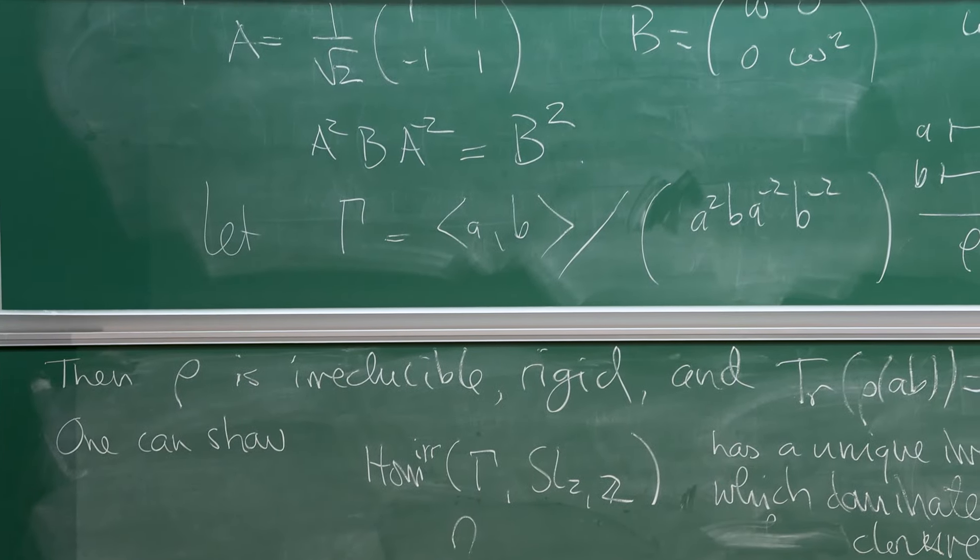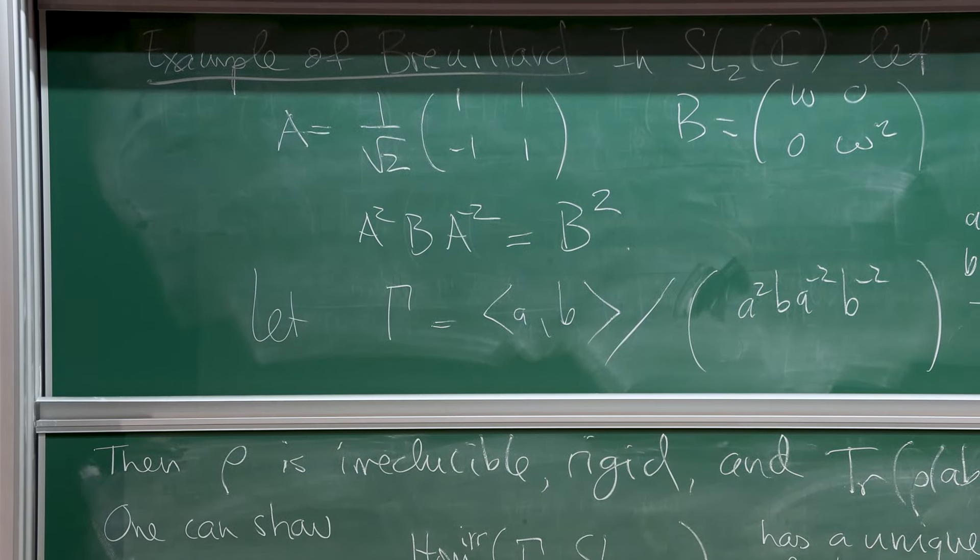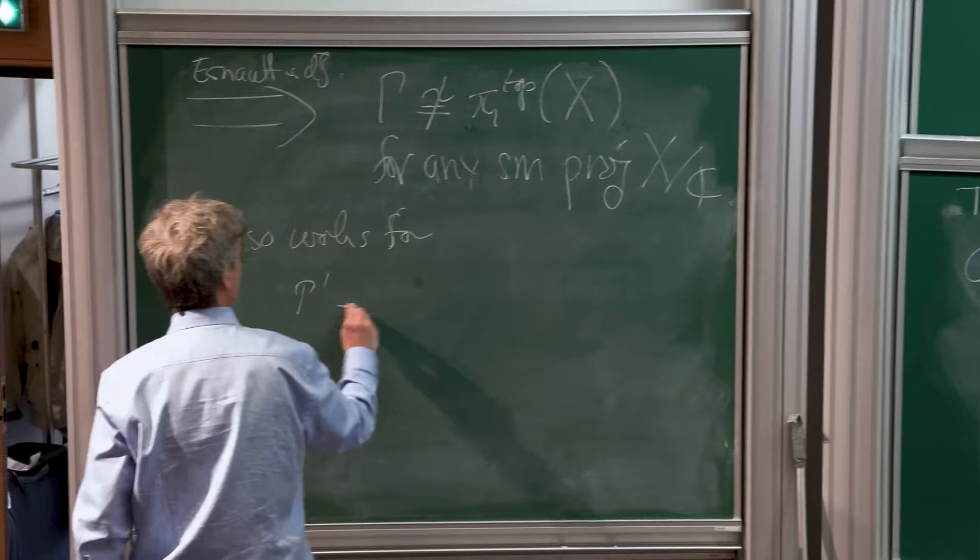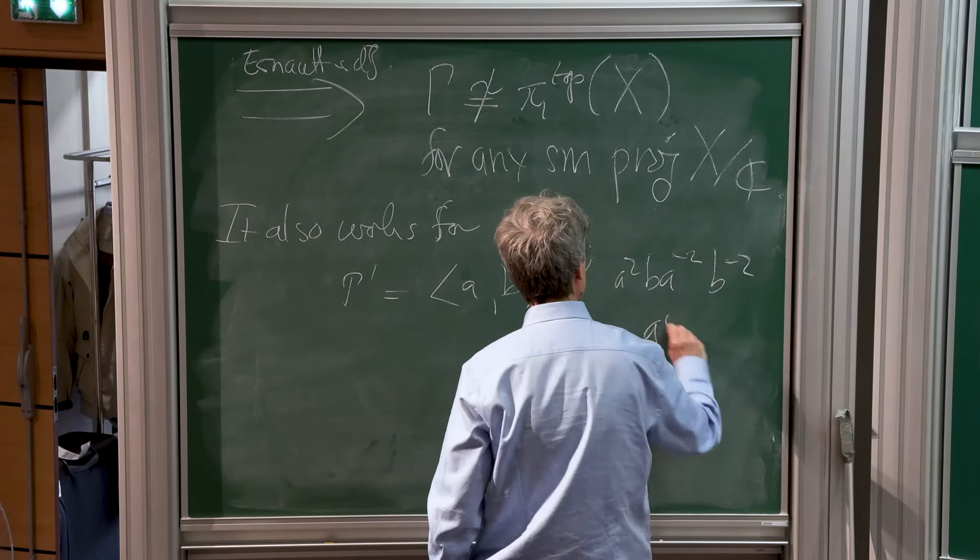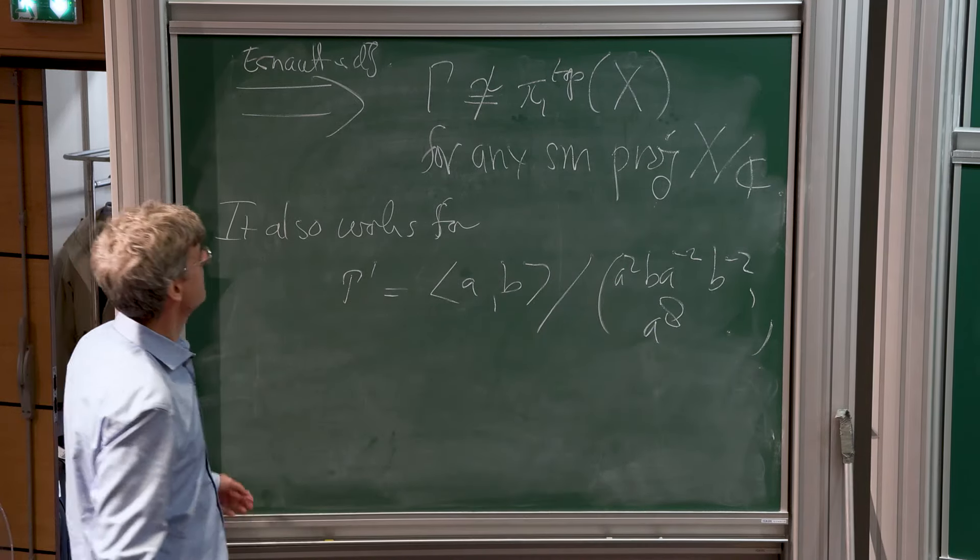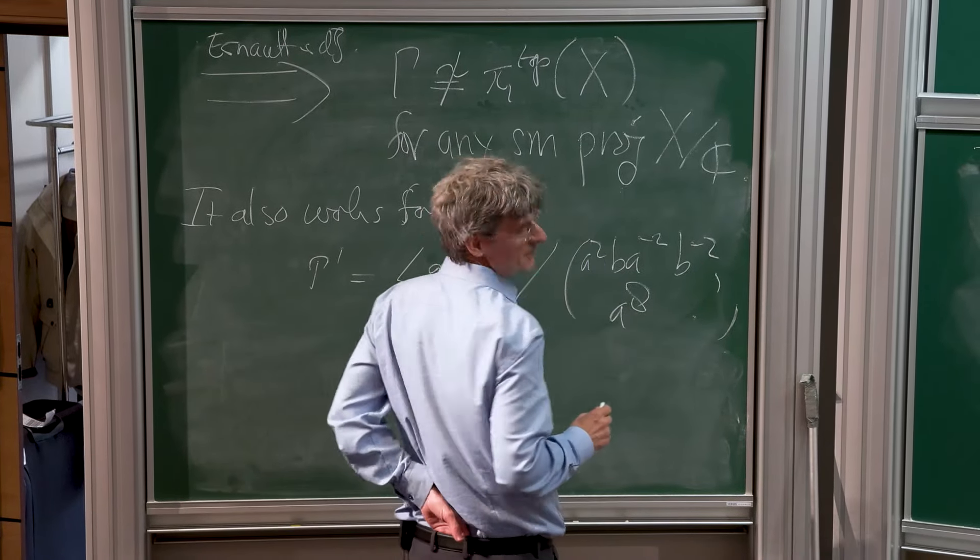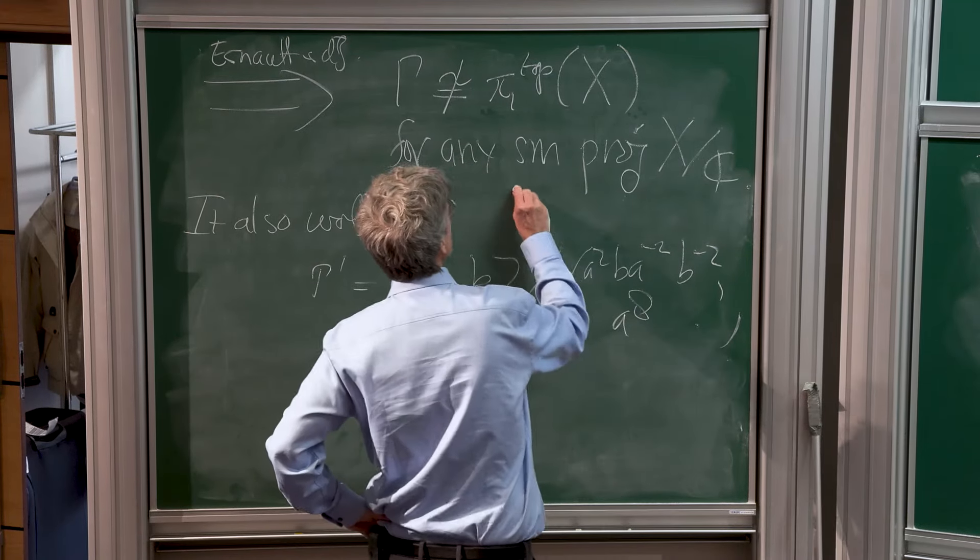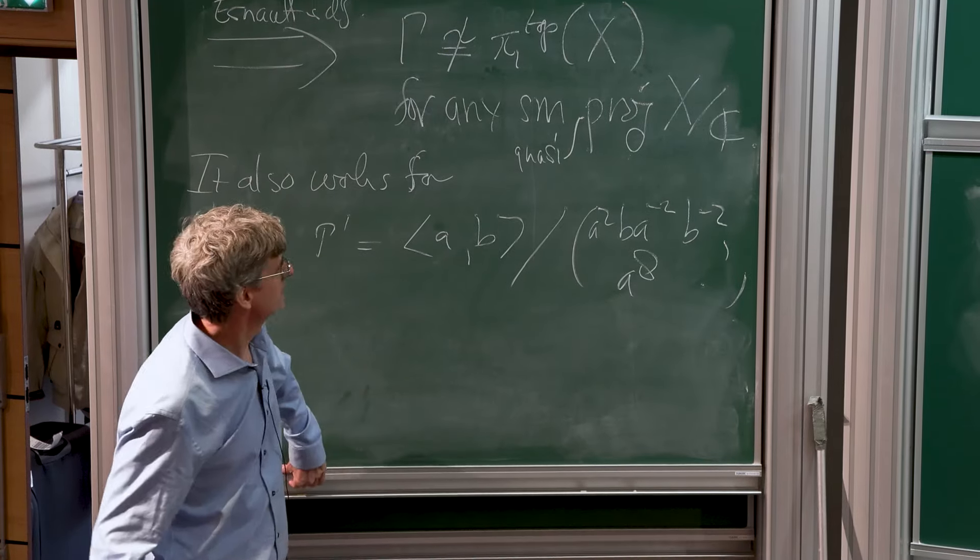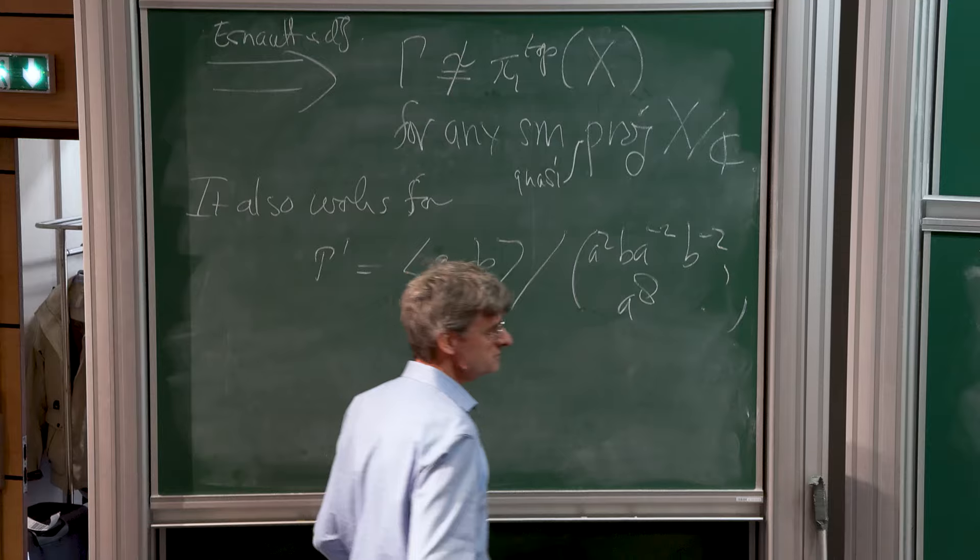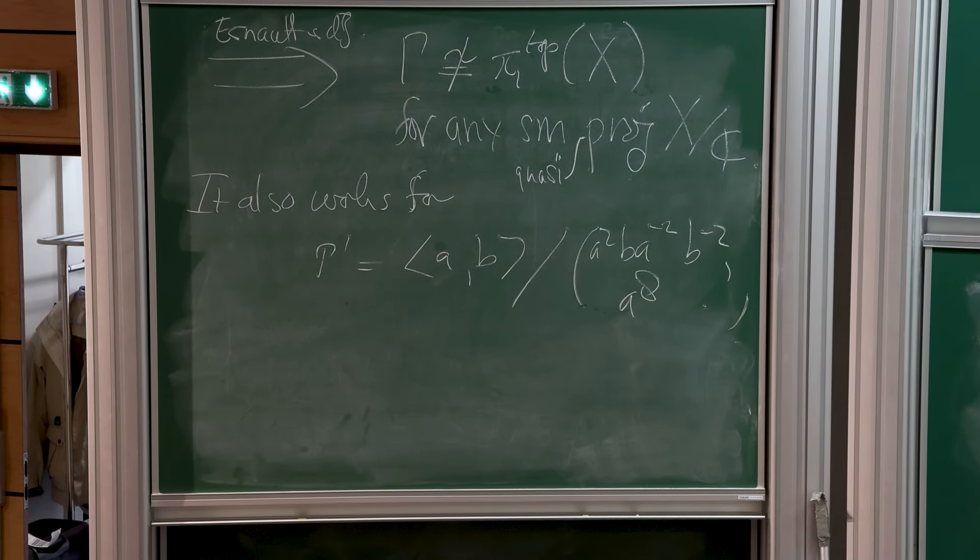Notice that A to the 8 is 1. It also works for Gamma prime, which is the quotient modulo the word and A to the 8. You wanted to say it's not a fundamental group for any smooth quasi-projective variety. Right, yes, and we also showed that. Since there's no argument with b1, but you can also take this one. That's much better.